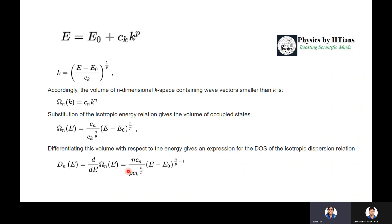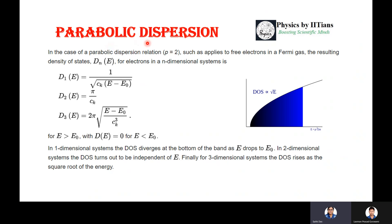dΩₙ(E)/dE = (ncₙ/pcₖ)^(n/p)(E - E₀)^(n/p - 1). Suppose p = 2, that is parabolic dispersion which is the case for free electrons in a Fermi gas.